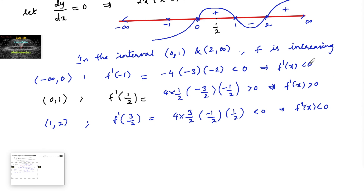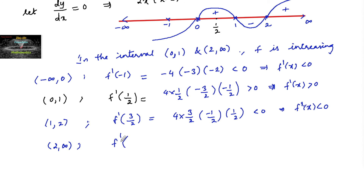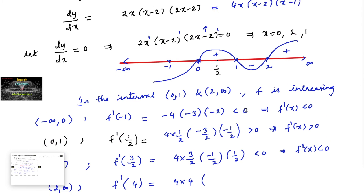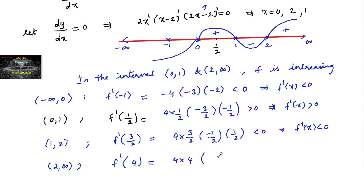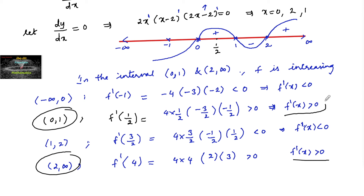For the last interval (2, ∞), take x = 4: f'(4) = 4·4·(4-2)·(4-1) = 4·4·2·3, which is a positive value. So f'(x) > 0, meaning the function is increasing on (2, ∞). Therefore, f is increasing on (0, 1) and (2, ∞). Thank you.